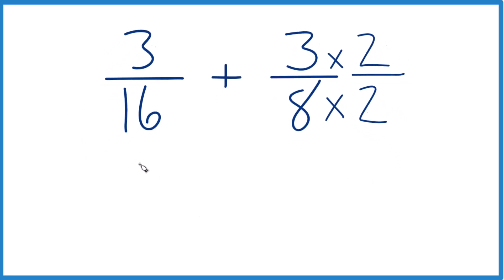So let's say 3/16, we'll keep that the same, plus 3 times 2 is 6 and 8 times 2 is 16. Now we have the same denominators. We can just do 3 plus 6, that's 9.